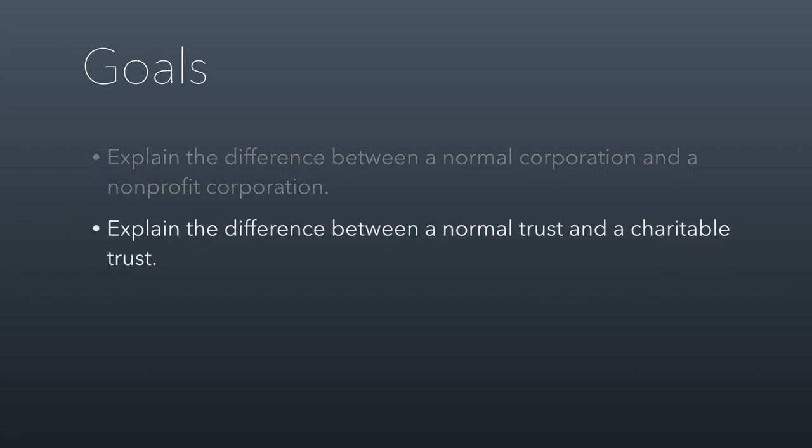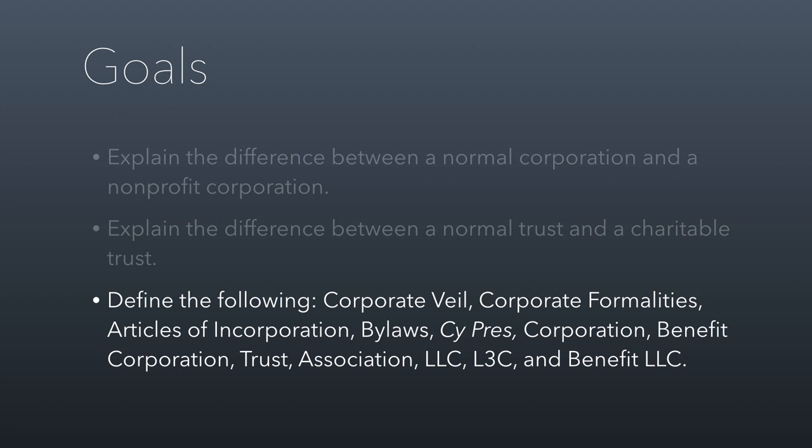I want you to be able to explain the difference between a normal trust and a charitable trust. Then we're going to go through some concepts I want you to be able to articulate: what's the corporate veil and how does it work, corporate formalities, articles of incorporation and bylaws, a legal doctrine called cy pres, and then each of the entity types we're going to be talking about — corporations all the way through benefit LLCs.